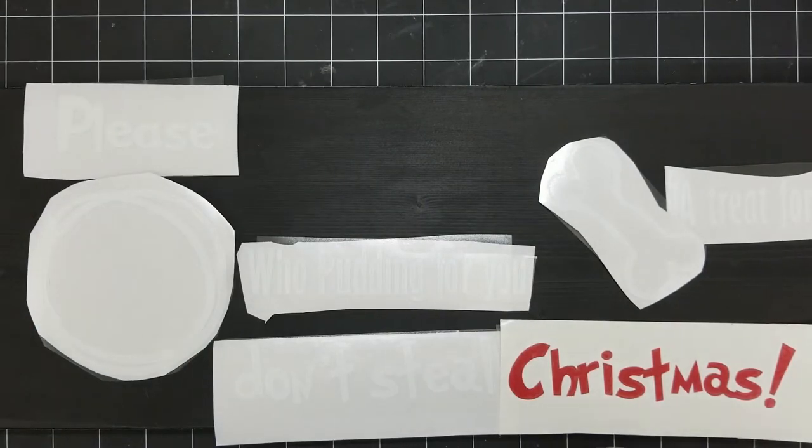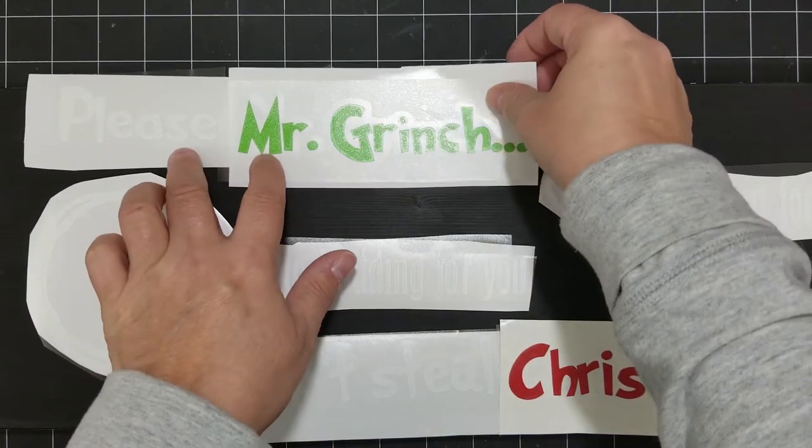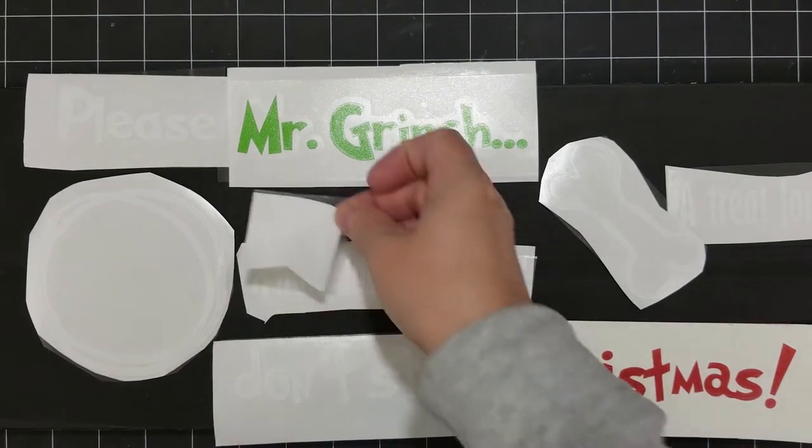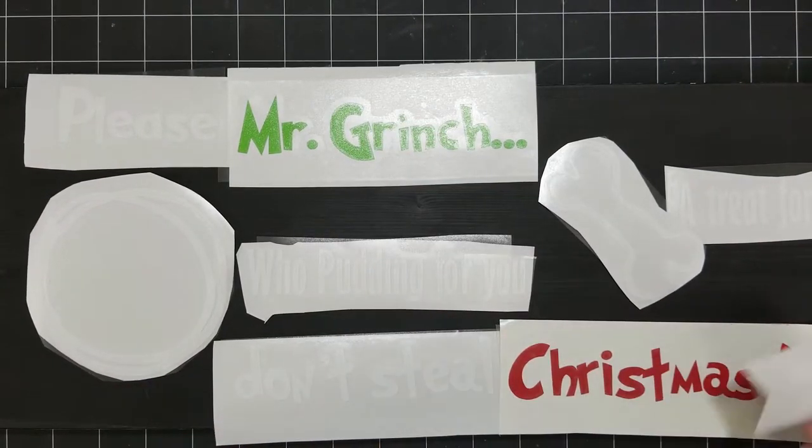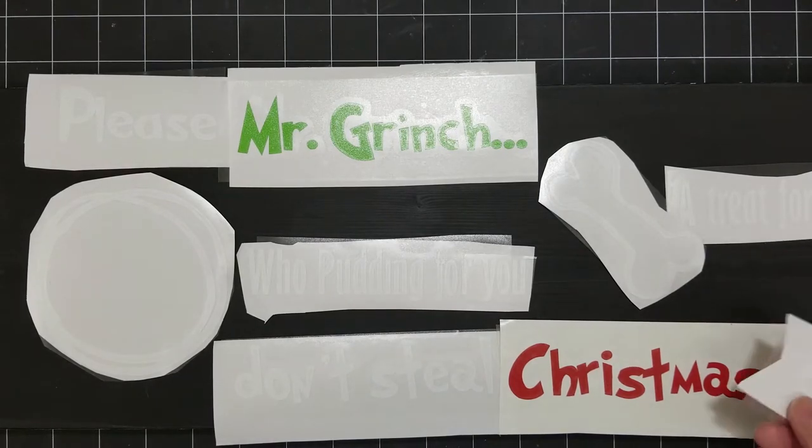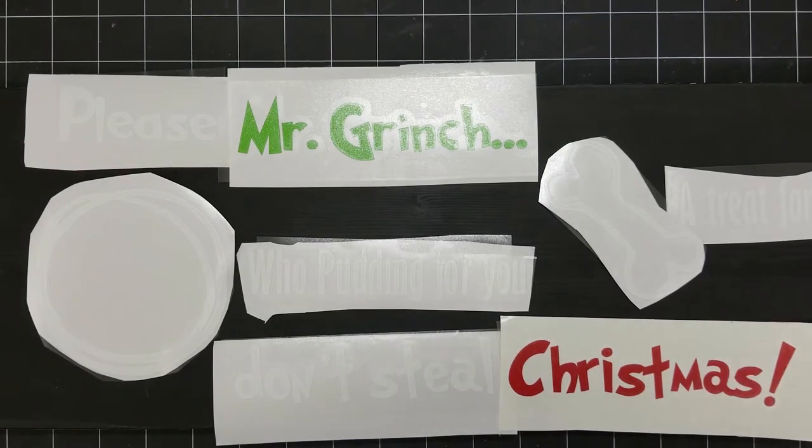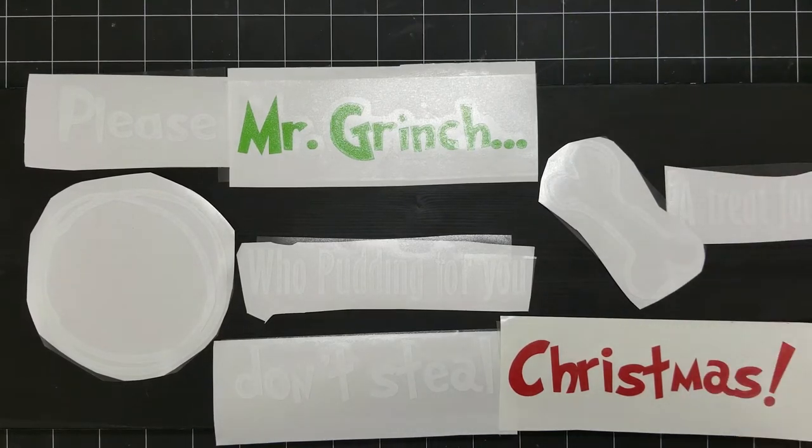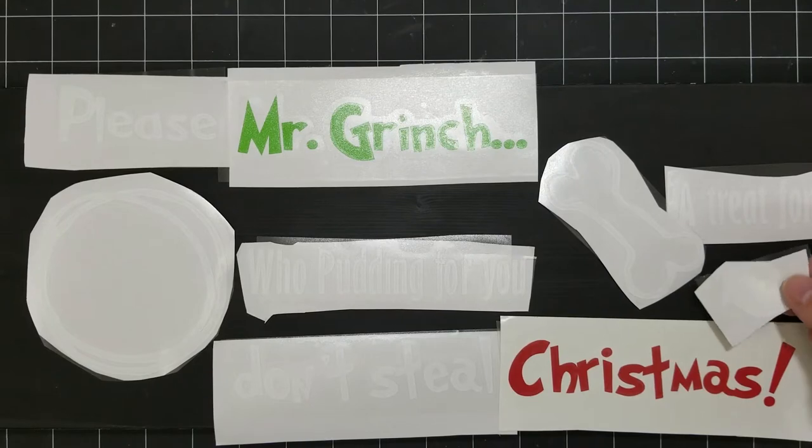So it says please Mr. Grinch don't steal Christmas and then I'm leaving him a who pudding snack, who pudding for you and a little treat for Max his dog. And these are some arrows that I'm trying to figure out where I want the arrows to go.